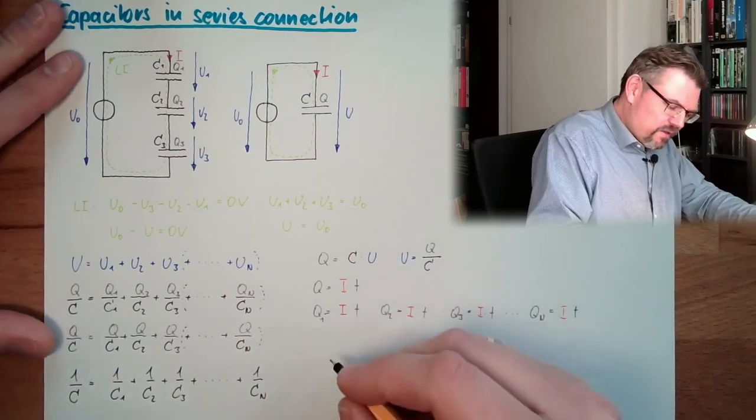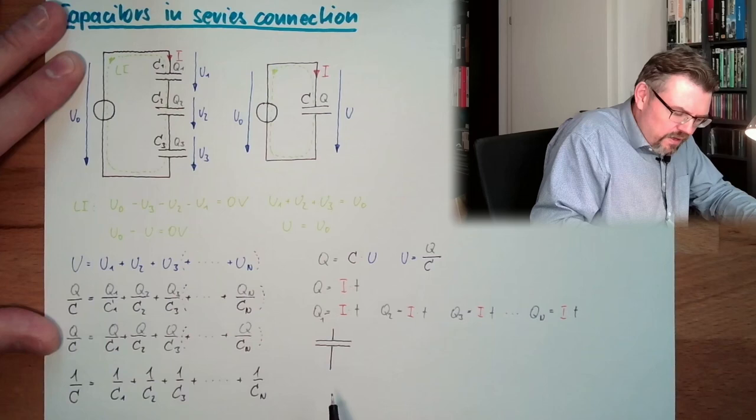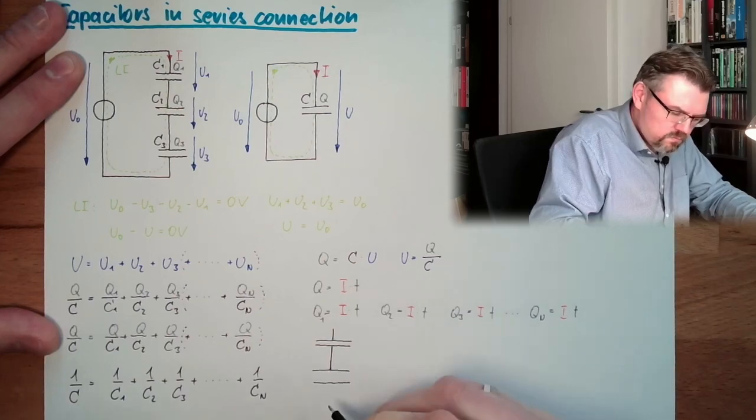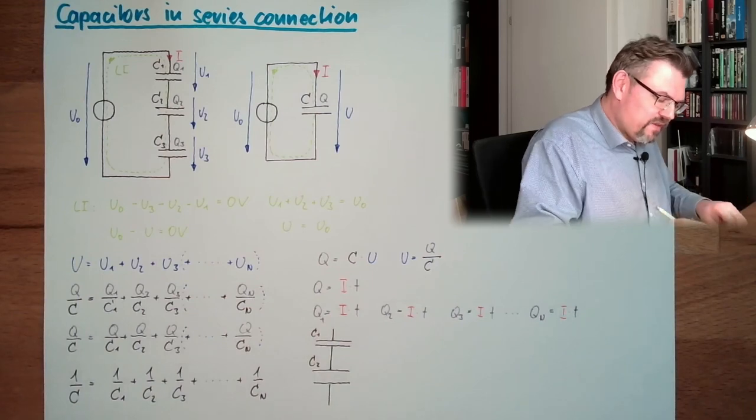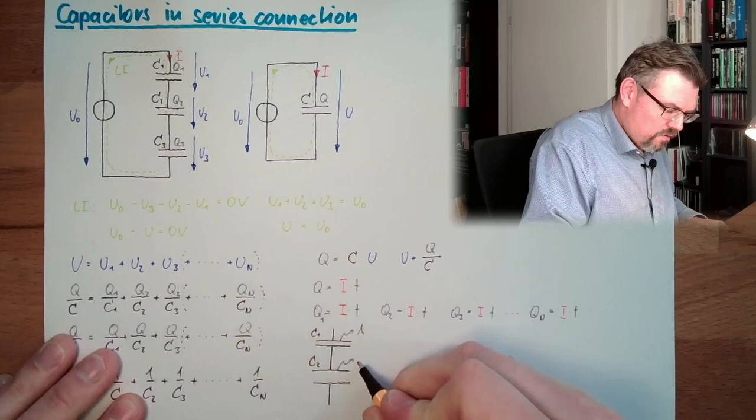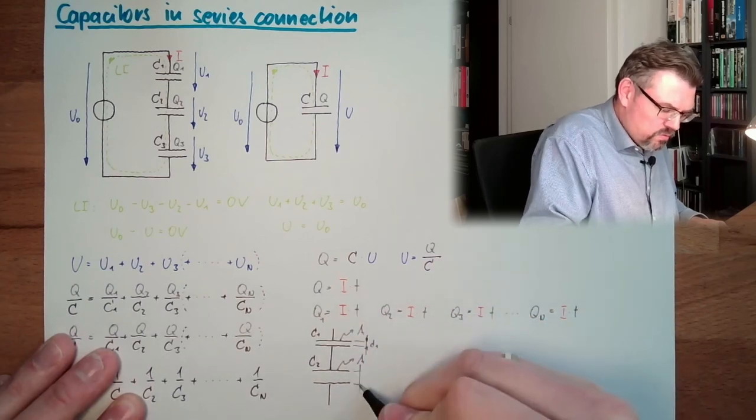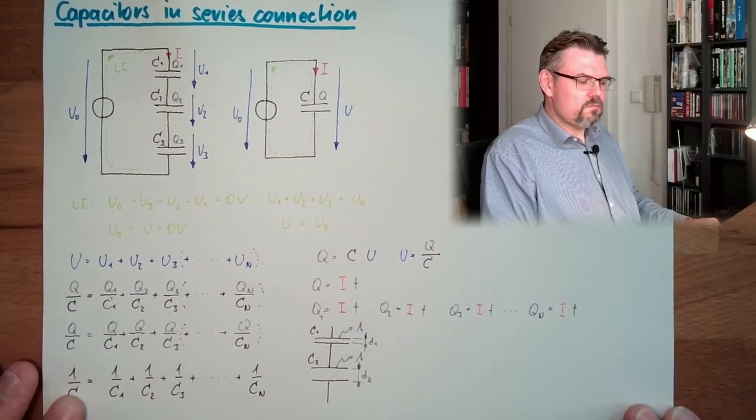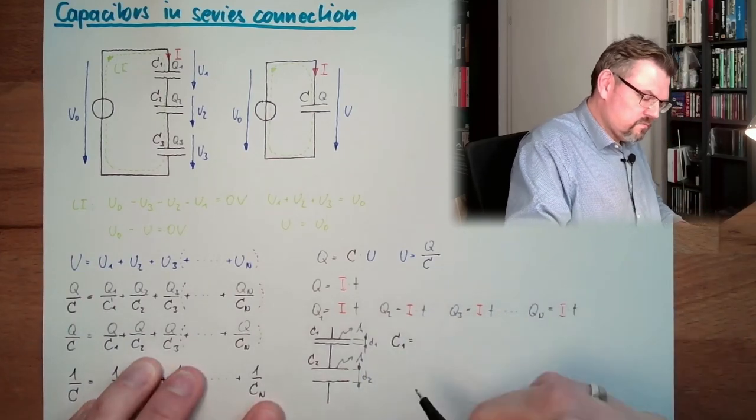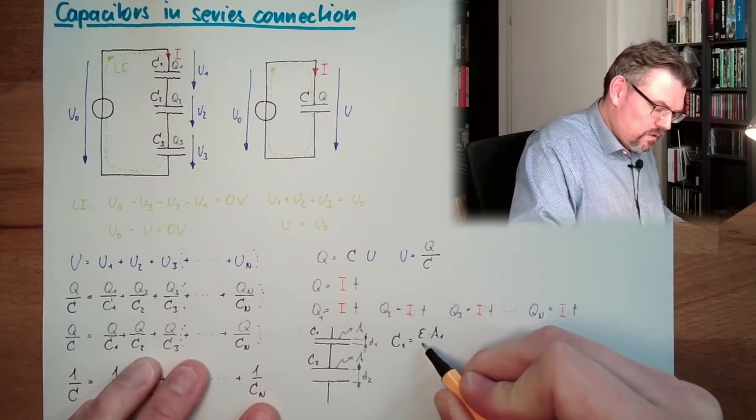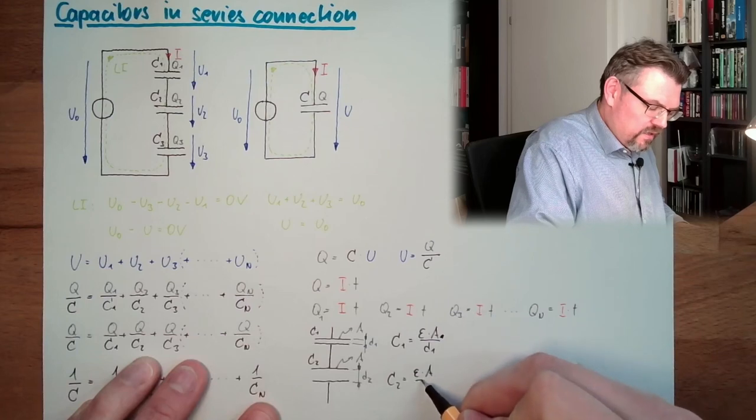Well, we can imagine it that way. That we have here a capacitor c1. We have here a capacitor c2. So this is c1, this is c2. Both capacitors do have the same area a. So we have here an a, we have here an a. However, this capacitor has a d1, this capacitor has a d2. And we said c1 equals epsilon times a divided by d1. And c2 equals epsilon times a divided by d2.